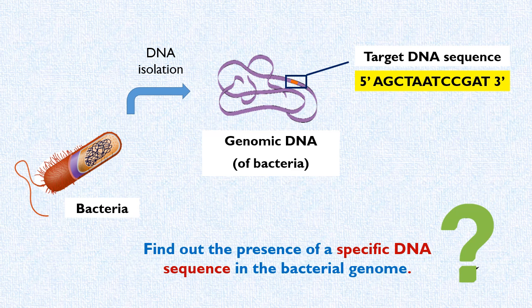Now the problem which we have to solve here is, how to detect and confirm the presence of this target sequence in the total bacterial DNA. The answer to this is the technique known as Southern blotting.